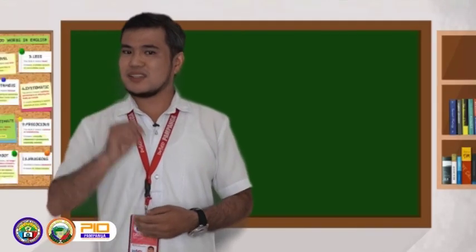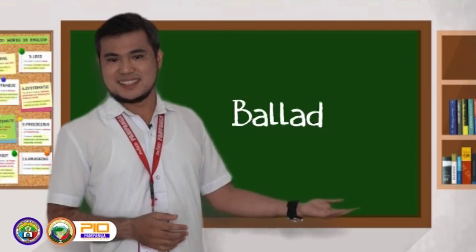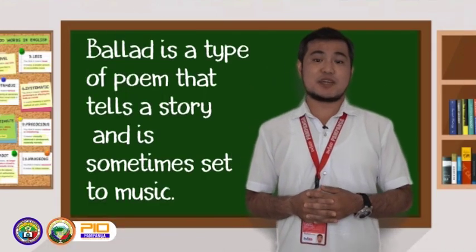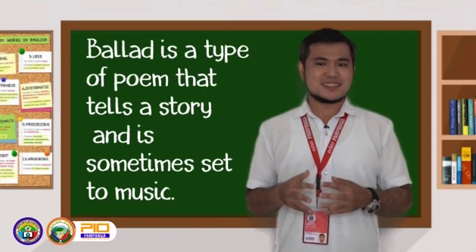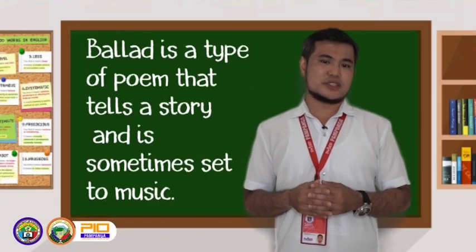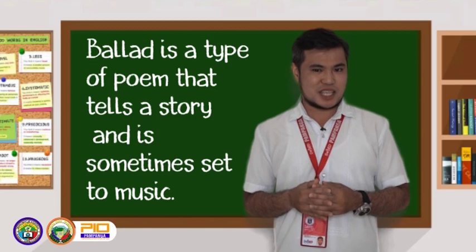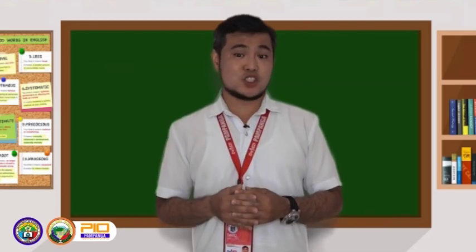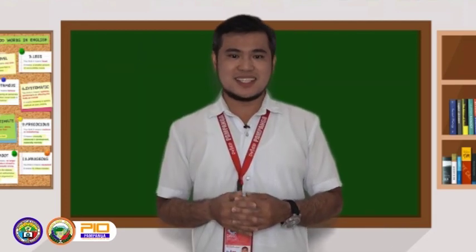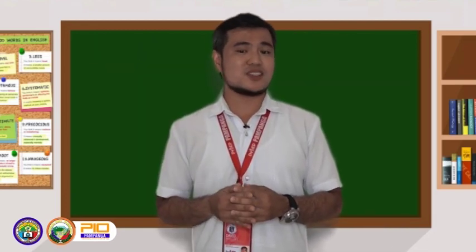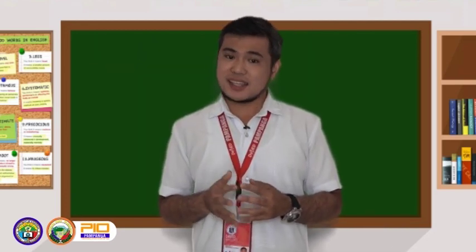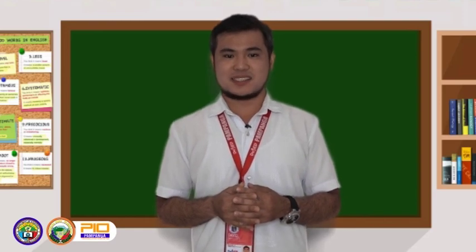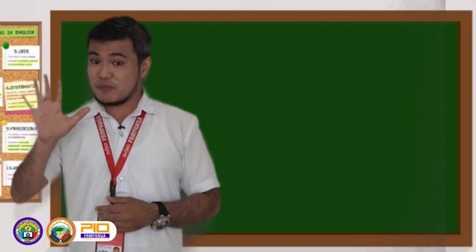The fourth type is the ballad. A ballad is a type of poem that tells a story and is sometimes set to music. The main feature of a ballad is the repetition of certain lines or even the whole stanza.